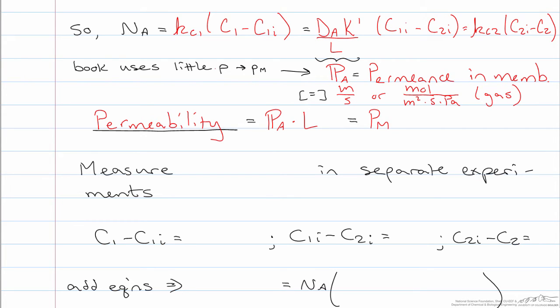That is sometimes given the symbol PM for permeability. The reason both of these terms are defined is because often the membrane thickness is not something that is known or well characterized, and so the permeance is used instead of the permeability.